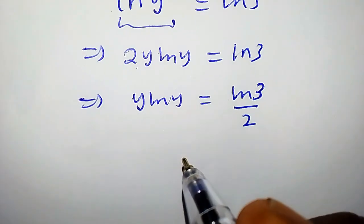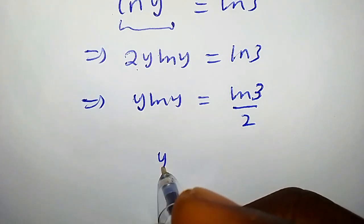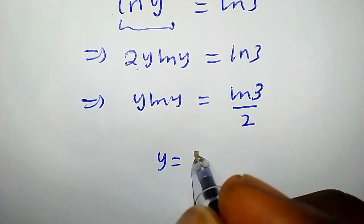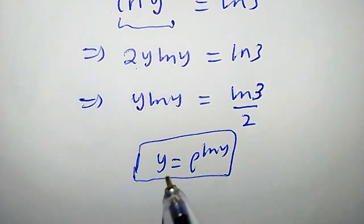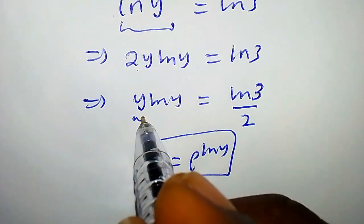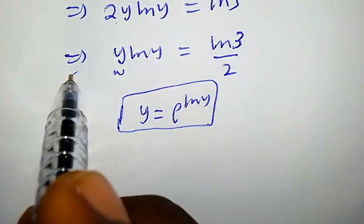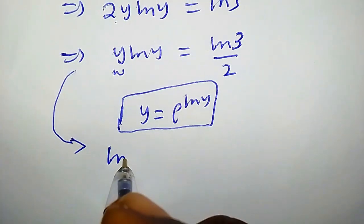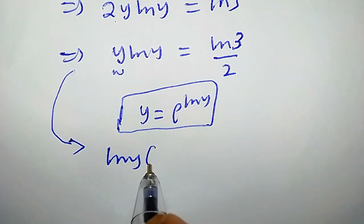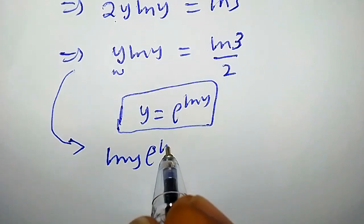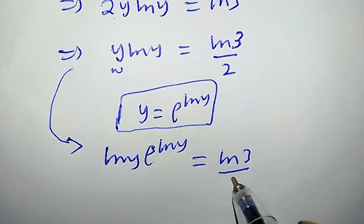Now, some of us will know this property very well: y is the same as e to the power of ln(y). So in this case, we are going to replace this y with e^(ln y). From here, we're going to have ln(y) times e to the power of ln(y) equals ln(3)/2.